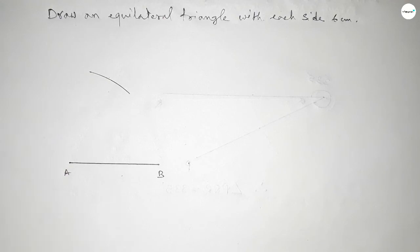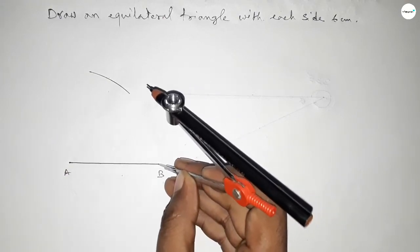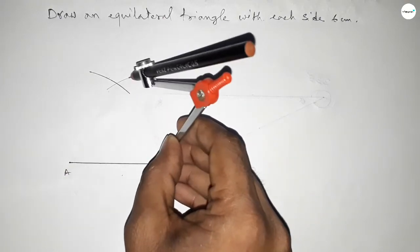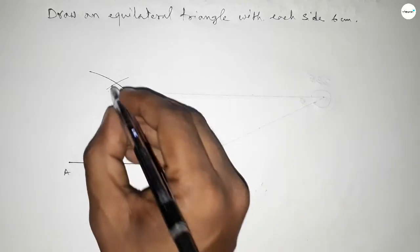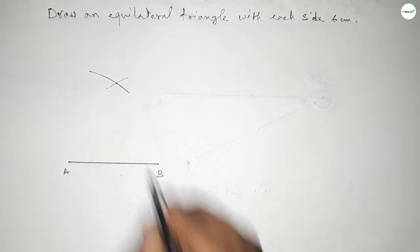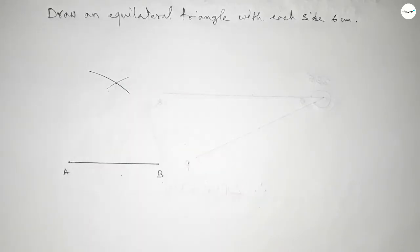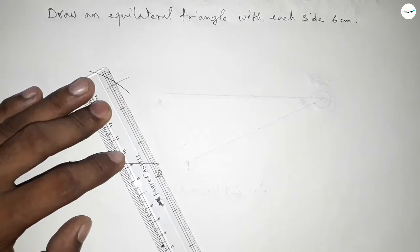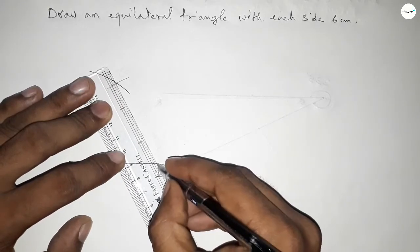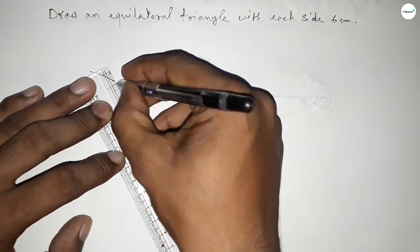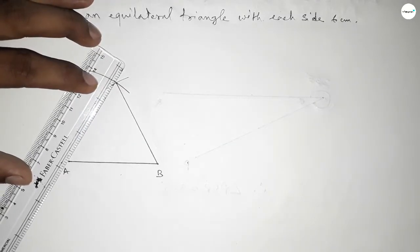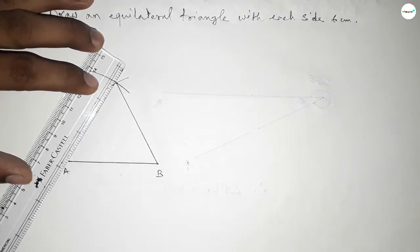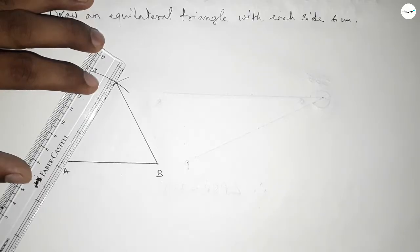Now taking the length AB by compass, drawing an arc with the same length from point A, then putting the compass at B and cutting another arc here, so both curves intersect at a point.